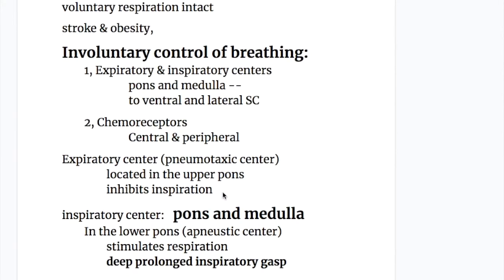The involuntary control of breathing involves two important components: number one, the expiratory and inspiratory centers, and number two, chemoreceptors. The expiratory and inspiratory centers are in the pons and medulla, connected to the ventral and lateral spinal cord. The chemoreceptors are of two types: central and peripheral chemoreceptors.